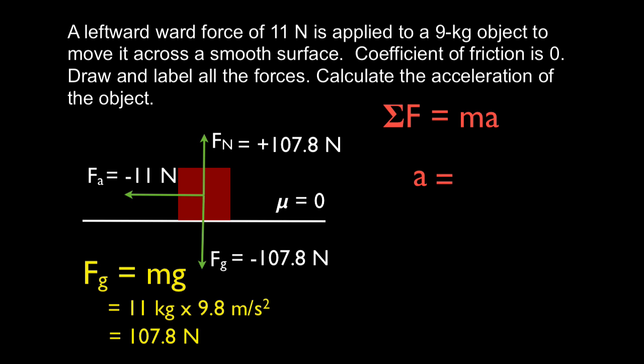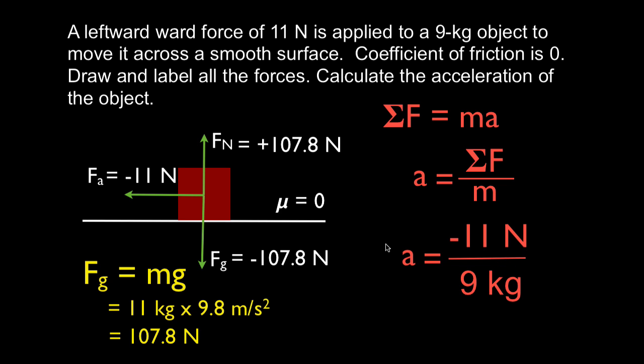We use Newton's second law and solve for acceleration: sum of forces divided by mass. The only relevant force is the applied force — the normal force and gravitational force cancel each other out. We're moving to the left, and the only horizontal force is minus 11 Newtons. So the acceleration is minus 11 Newtons divided by 9 kilograms, giving minus 1.22 meters per second squared. The minus sign tells us the acceleration is in the negative direction. The velocity is also in the negative direction, and since acceleration and velocity are in the same direction, the object is speeding up.